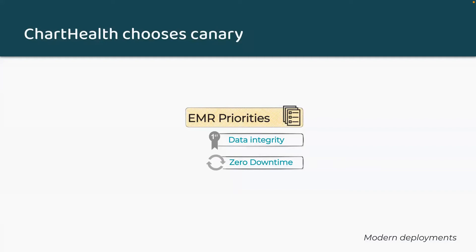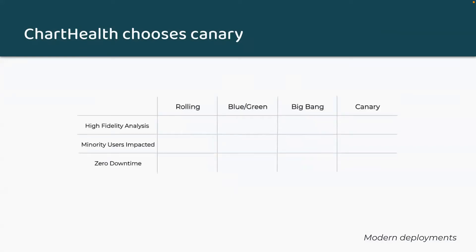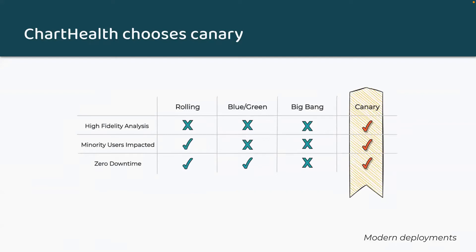Now that we understand how the four deployments work and the pros and cons of each, let's revisit ChartHealth's deployment priorities. One, medical records should be as high integrity as possible, and two, there should be zero downtime during updates. ChartHealth narrowed down the deployment types based on three criteria: the option to have high fidelity analysis of the updated software's performance, minority users impacted if there are bugs to the revision, and zero service downtime during the deployment. As you can see from this chart, canary deployment is the only technique that fulfills all three criteria, so ChartHealth is interested in using canaries for subsequent deployments. In the upcoming section, Sam will continue with the ChartHealth narrative to review existing canary solutions.